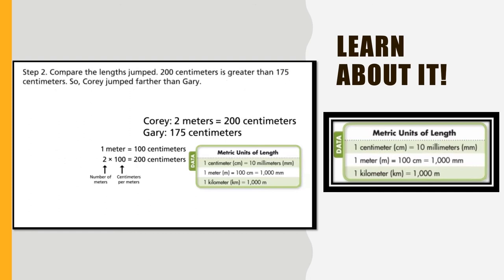Step 2. Compare the lengths jumped. 200 centimeters is greater than 175 centimeters. So Corey jumped farther than Gary. Now you know how to convert from one unit of metric length to another.